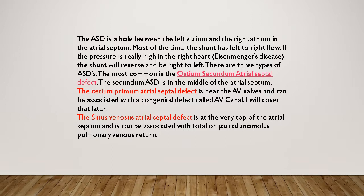The most common is the ostium secundum atrial septal defect. The secundum ASD is in the middle of the atrial septum. The ostium primum atrial septal defect is near the AV valves and can be associated with a congenital defect called AV canal, which we'll cover later. The sinus venosus atrial septal defect is at the very top of the atrial septum.